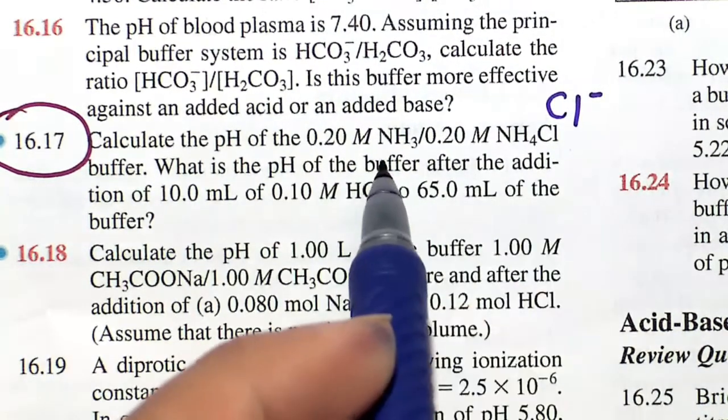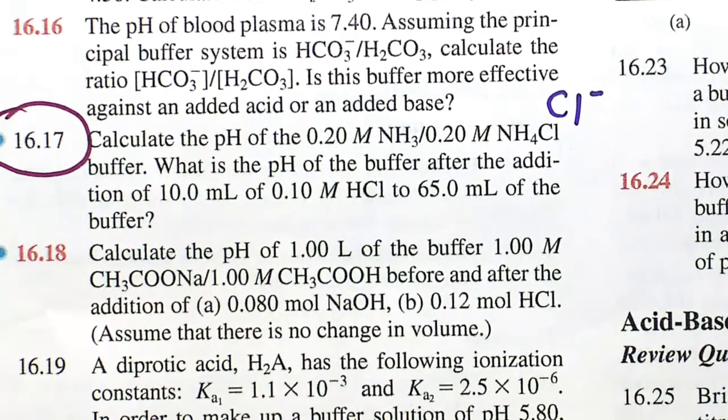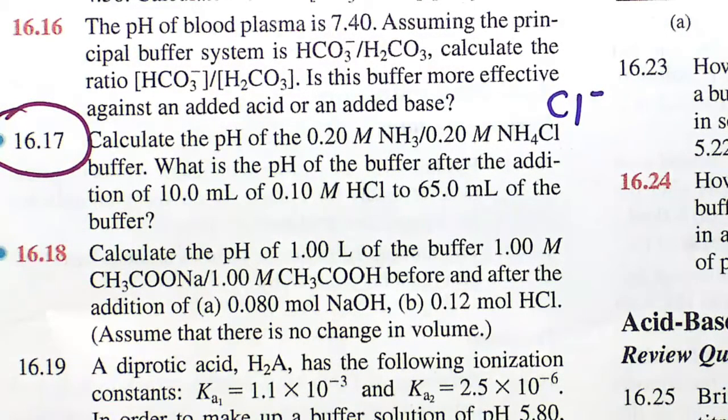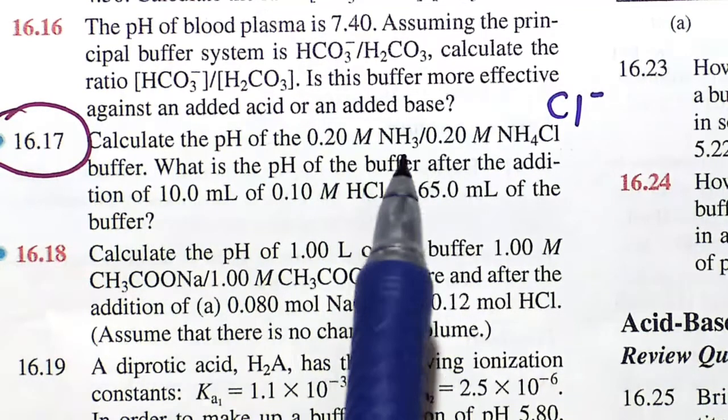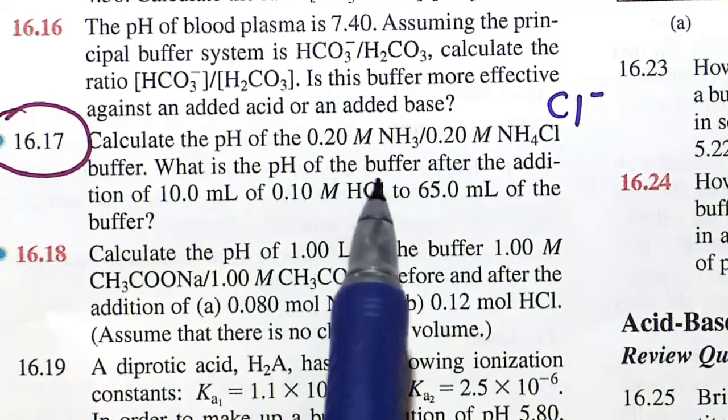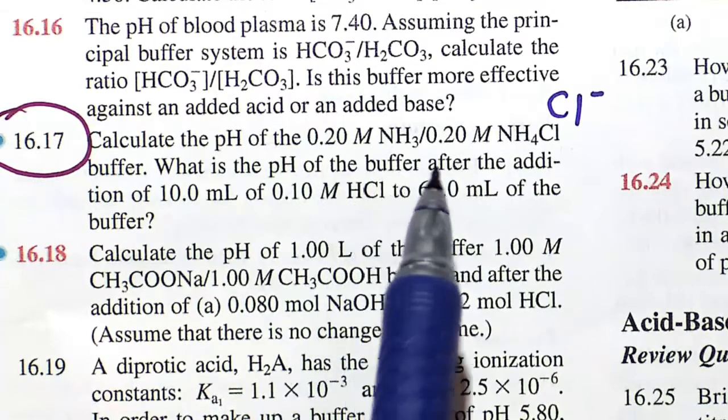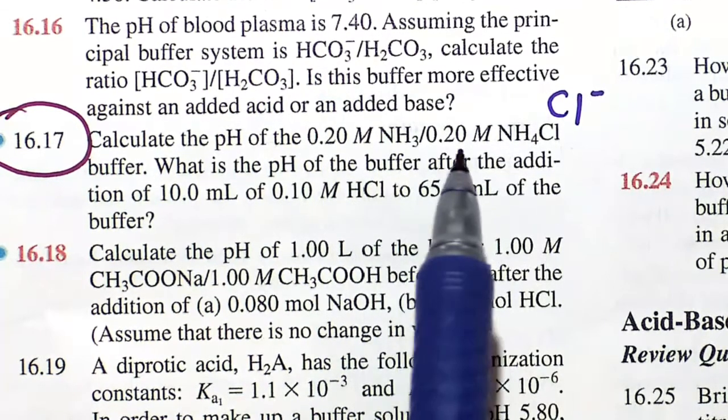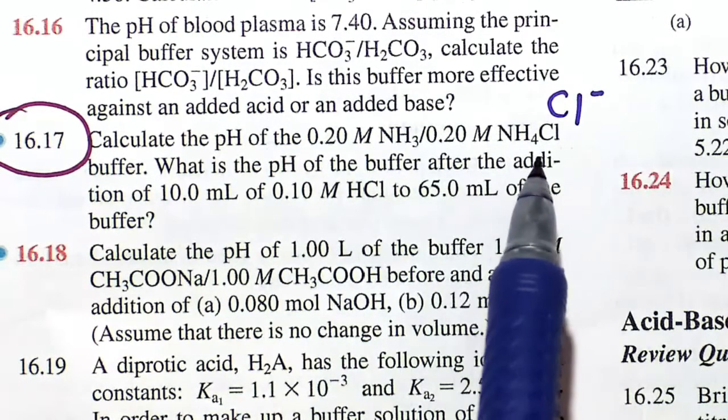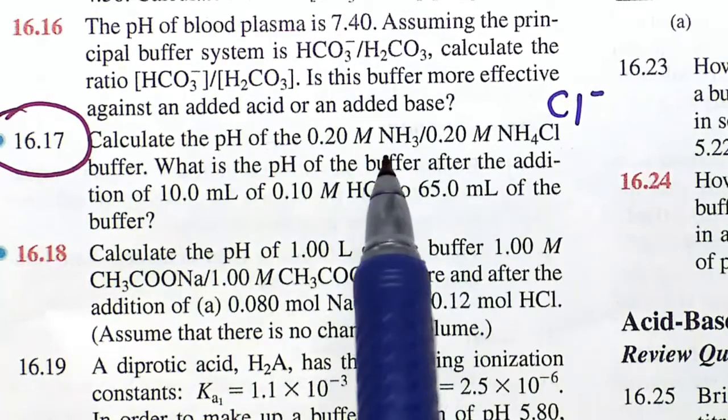Another thing we need to realize is that the Cl- here from ammonium chloride is a spectator ion. It will not participate in any of the acid-base reactions. So the conjugate acid-base pair here is ammonia, NH3, with the ammonium ion, NH4+. Both of these are at a concentration of 0.2 molar, which represents a buffer.